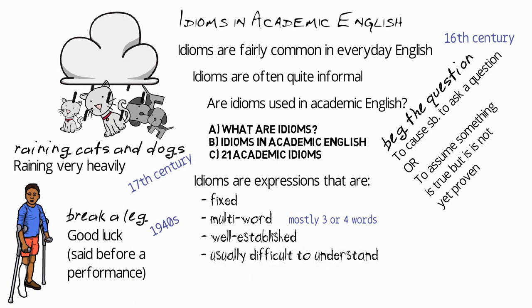Finally, idioms are usually rather difficult to understand. That's because you can't usually deduce the meaning from the individual words. For example, you might know the words rain and cats and dogs, but that doesn't help you understand the expression raining cats and dogs.